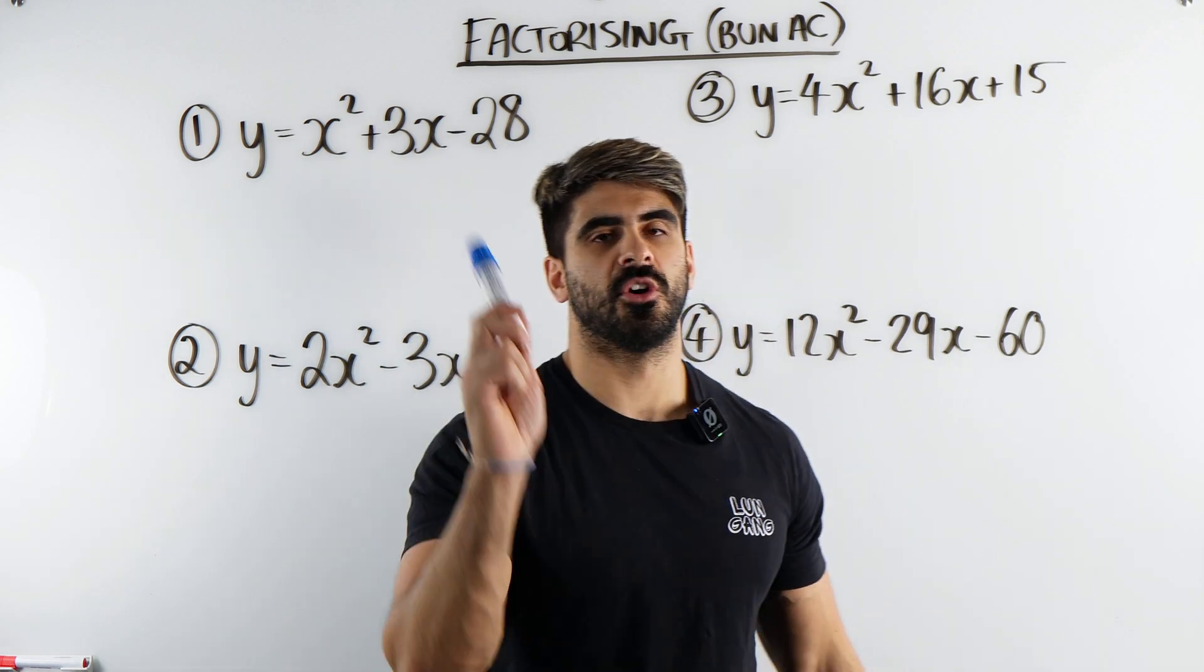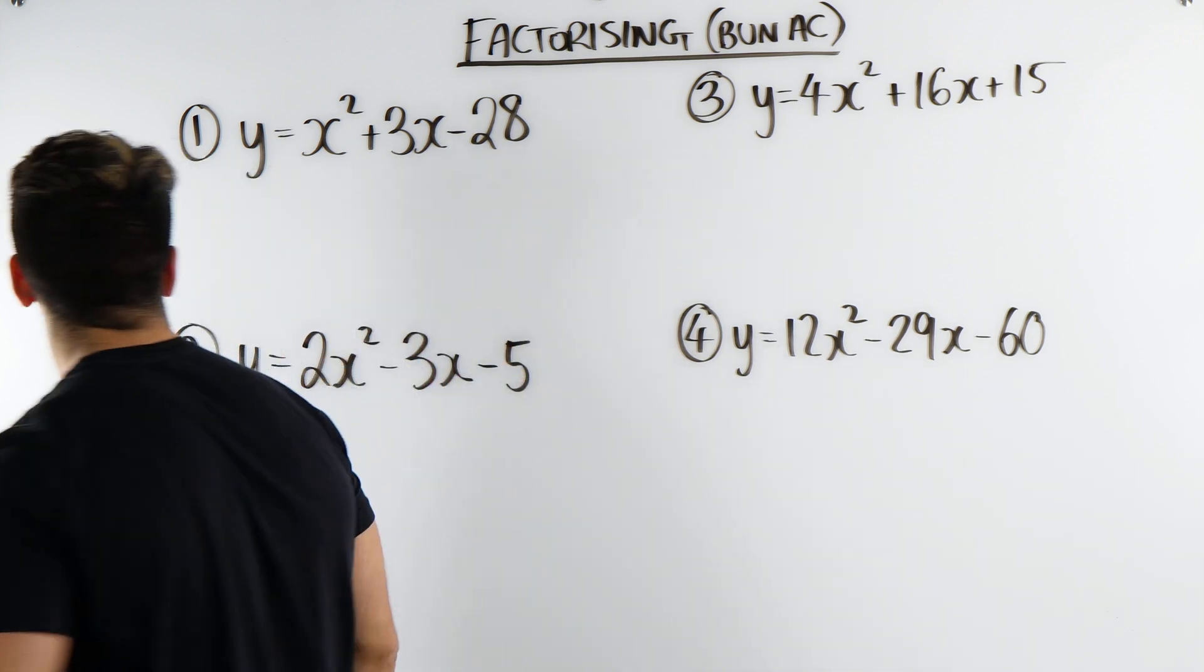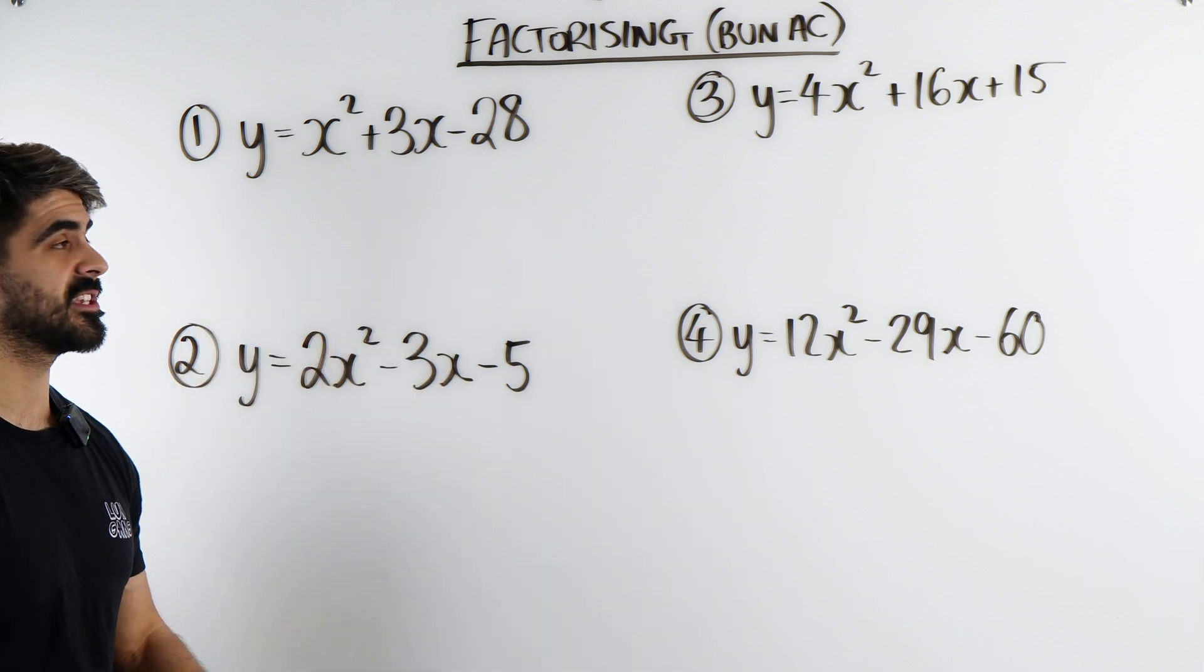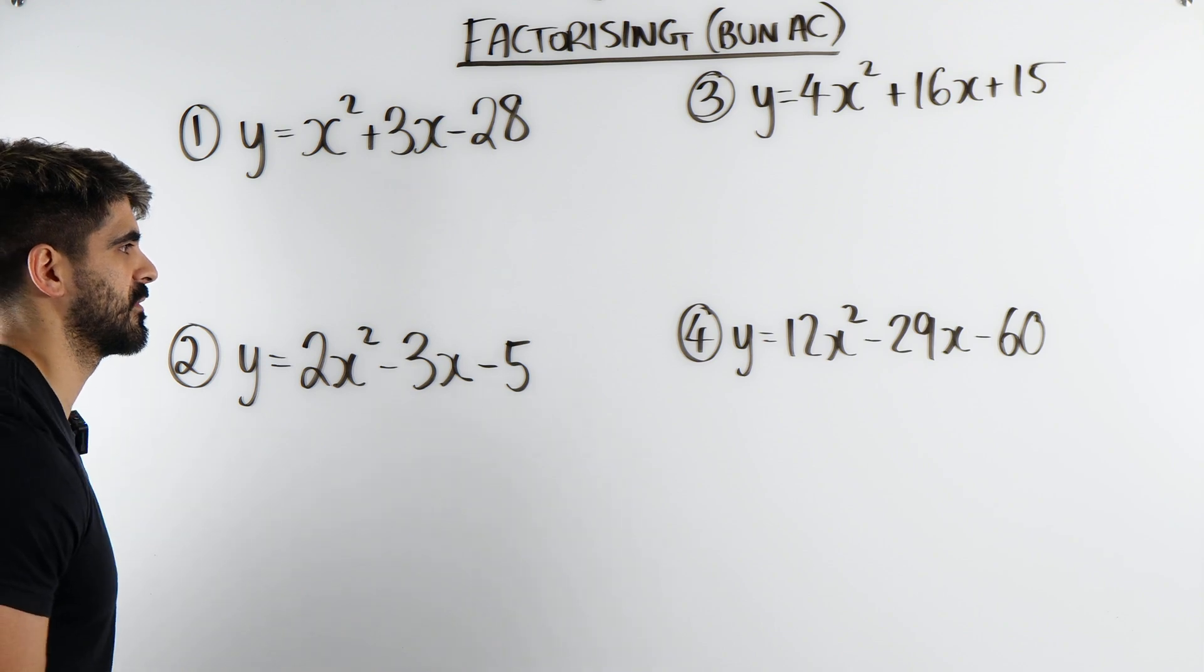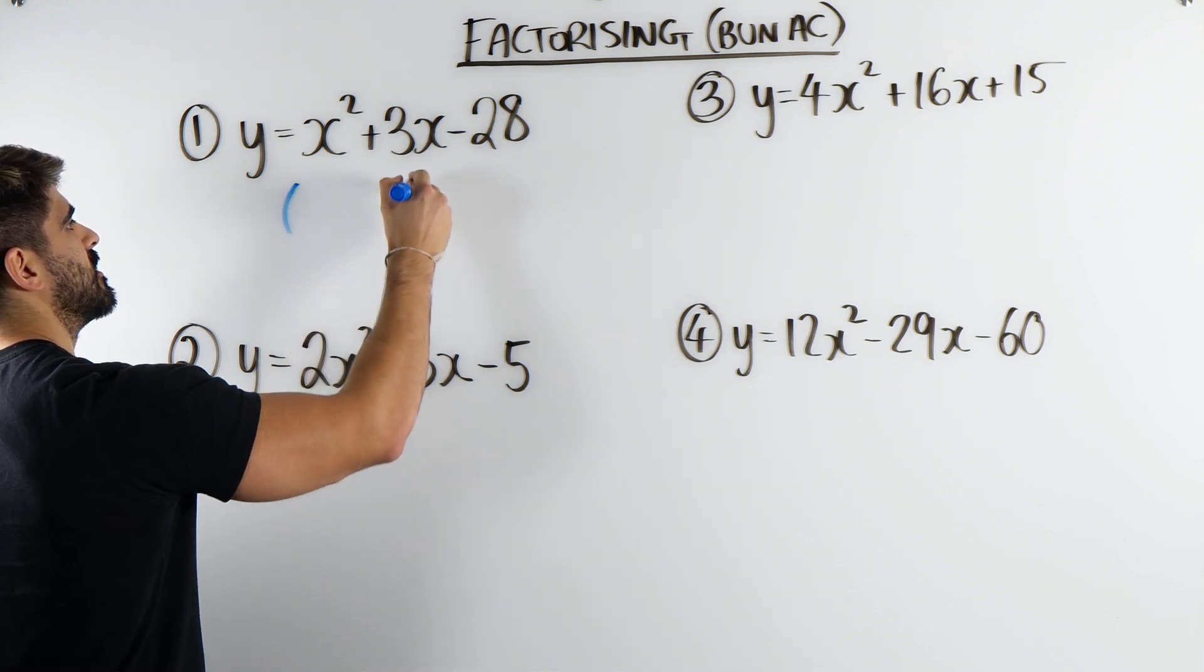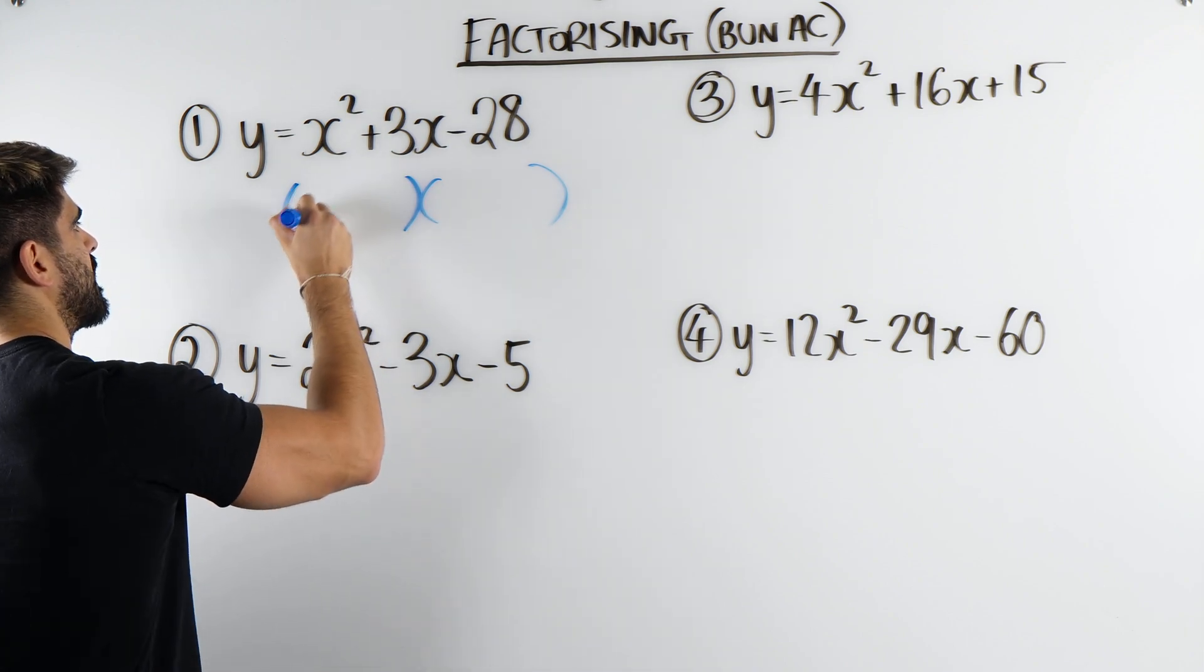Still using the AC method? It's not looking good. Let me show you guys how we should be doing it nice and quickly. So we're going to explore these four quadratics, we're going to factorize them and we're going to go harder in terms of difficulty. So how do you factorize a basic quadratic where the coefficient of x squared is 1? Well very simply we have x and x.